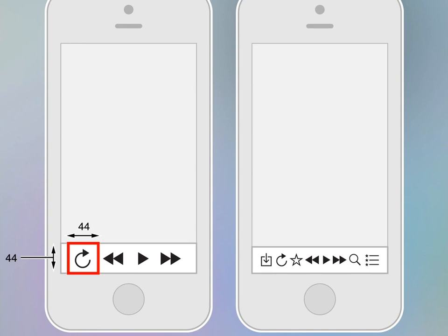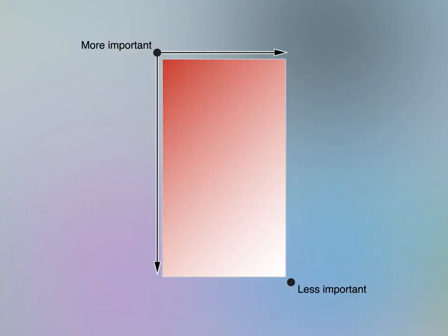Stuff that's important should go in the highlighted area. Stuff that's not important should go elsewhere. You make it easy for a user to focus on the main task by pushing important stuff into the corner of the screen where they're looking. You should design your app for one layout orientation, and then if you want to offer a preference to flip it you might, but most apps probably don't need to do that.